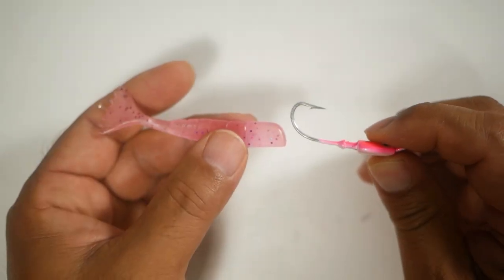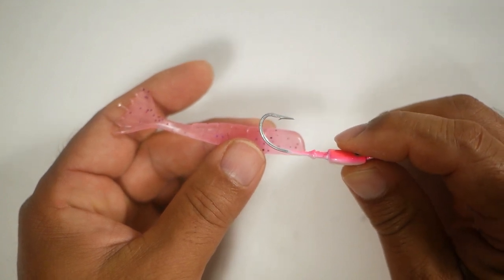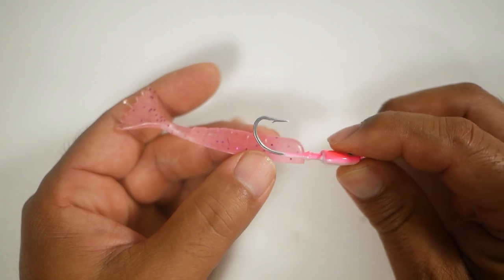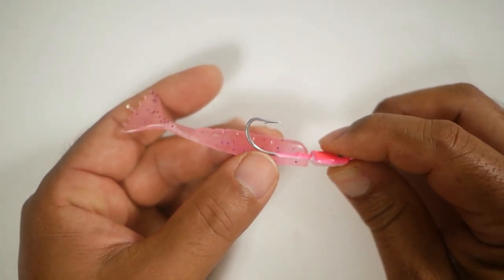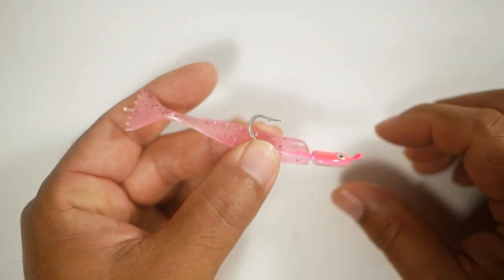Before we start rigging, we want to measure and identify the spot where we want our hook point to exit the soft plastic shrimp. The way you're going to do that, take your jig head and lie it right next to the side of the bait there. If you place it, you'll be able to see exactly where you need to have that exit point.